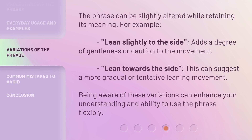The phrase can be slightly altered while retaining its meaning. For example, 'lean slightly to the side' adds a degree of gentleness or caution to the movement. 'Lean towards the side' can suggest a more gradual or tentative leaning movement. Being aware of these variations can enhance your understanding and ability to use the phrase flexibly.